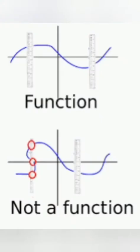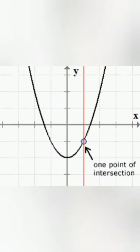As you can see in the diagram, we can test the graph if it is a function or not through the vertical line test. Since it only touches once, we can say that this relation passes the vertical line test, and therefore it is a function.